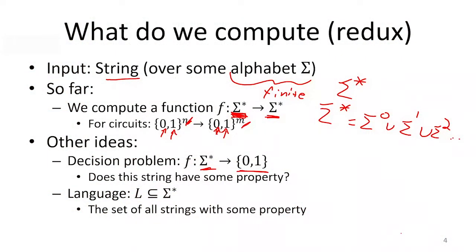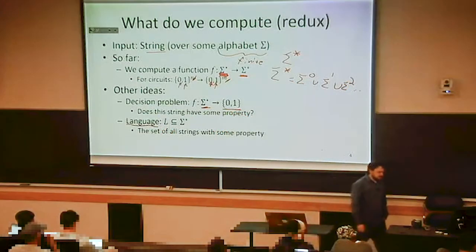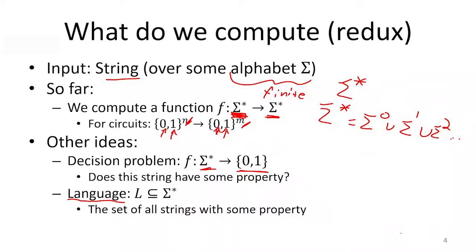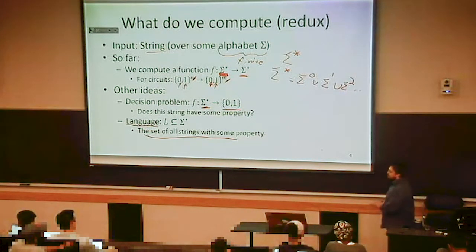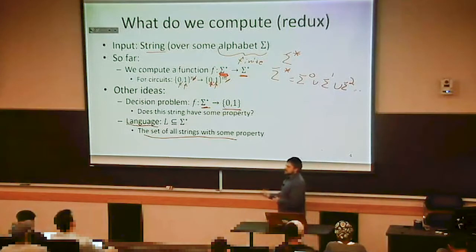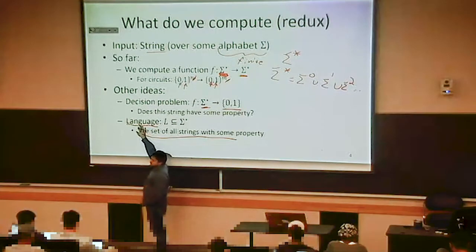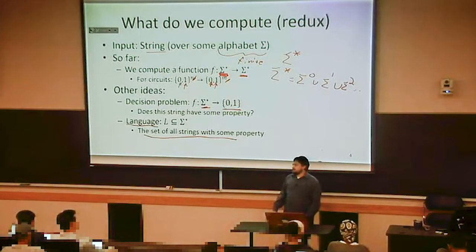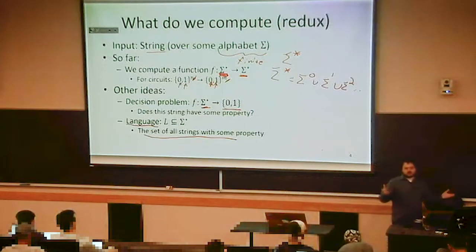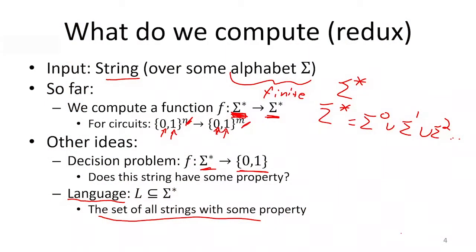We're also going to talk about another slightly different idea: the idea of a language. A language is just a set of strings. We define a language by stating the property that all of those strings share. This is different from a spoken or programming language. When we refer to 'language' in this context, we're essentially just saying: you hand me a string, and I just want to know — is it one of the words that's in my set? A language is just some set of words.